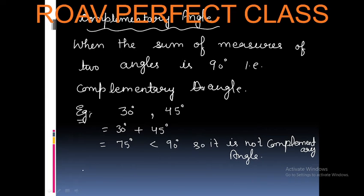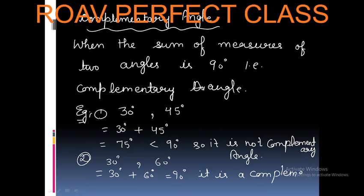But if we have two angles, 30 degrees and 60 degrees, after addition of both angles, we get 90 degrees. That means it is a complementary angle because its sum of measure of two angles is 90 degrees.